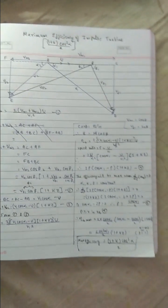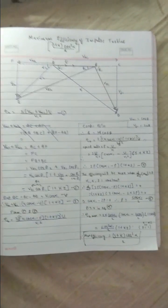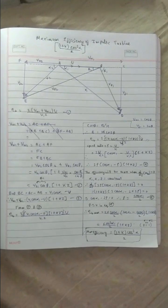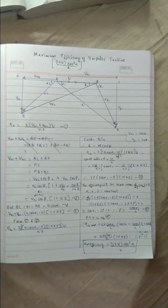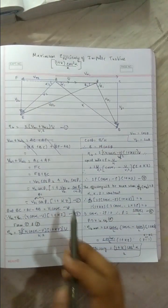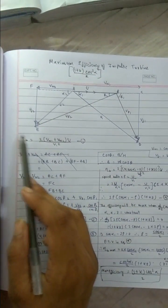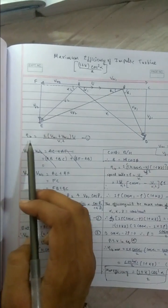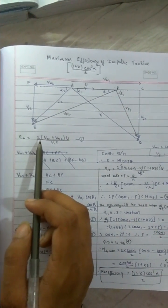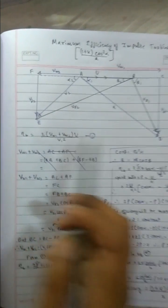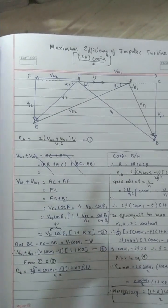Today we will be doing the conditions for the maximum efficiency of impulse turbine. For the velocity diagram check my other videos. We have got in the last lecture the blade efficiency is 2VW1 plus VW2 by V1 square into U.